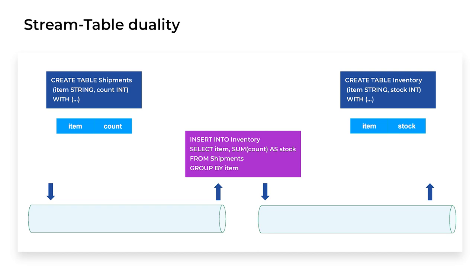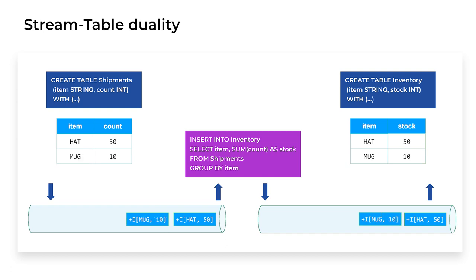A grouped aggregation is a good example of a query that produces updates. We begin by handling a shipment of 50 hats — an insert event in the input stream. The query reacts to this insert event by emitting an equivalent insert event to the output stream, and the sink performs this insertion in the output table. The same sequence unfolds for a shipment of 10 mugs, adding a row to the inventory table. Now something more interesting happens because the third record — shipping out 15 hats — will update the number of hats in the inventory rather than doing another insert.